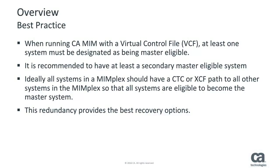When CA MIM is running with a virtual control file, one system must be defined as master to manage the control file. If a master system is unable to continue managing the control file, then a new master system is selected from a list of eligible masters. If no additional systems are defined as master eligible, then global operation is suspended until a new master becomes available. It is a CA MIM best practice to define at least one secondary master eligible system.